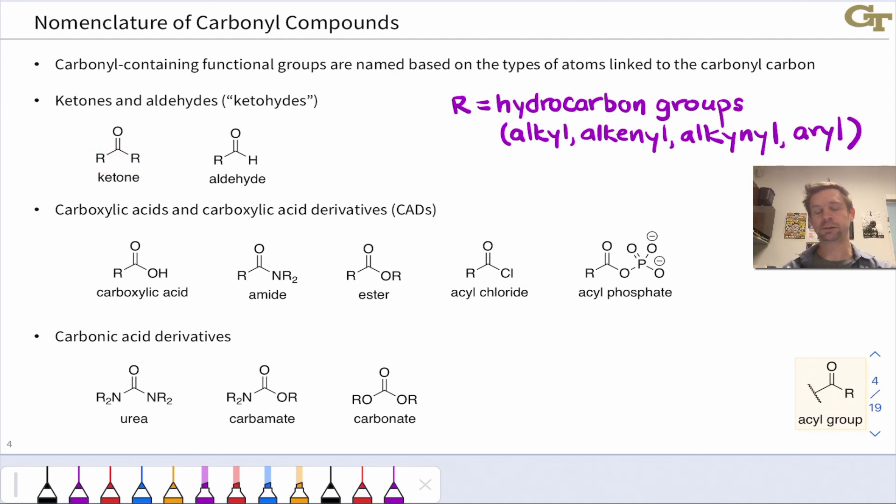One point of nomenclature that I want to point out: this CHO group that represents the aldehyde is known as a formyl group. This is how we abbreviate an aldehyde with CHO to indicate that the O is doubly bonded to the carbon and the H is also bonded to the carbonyl carbon.